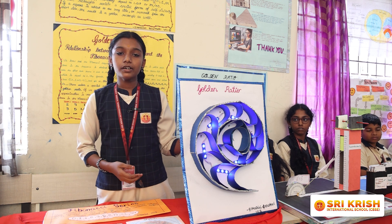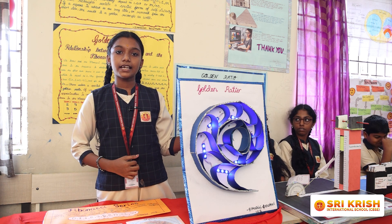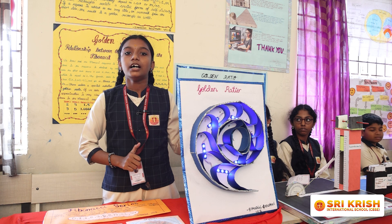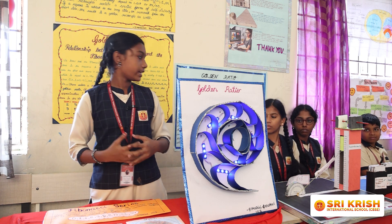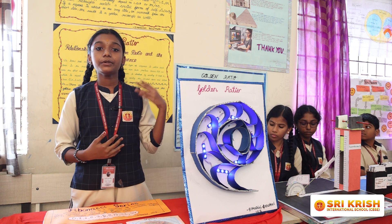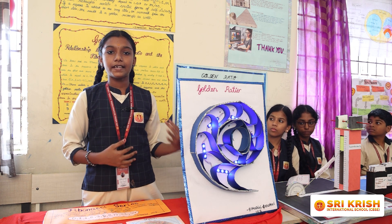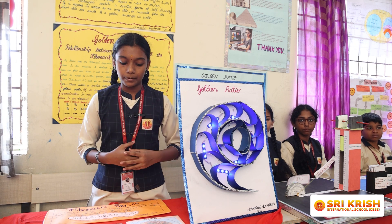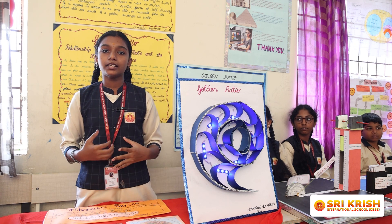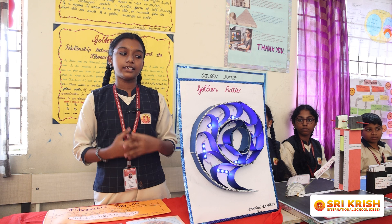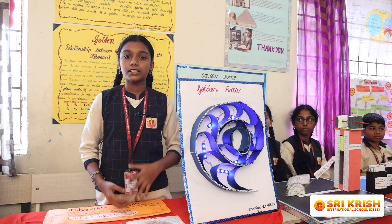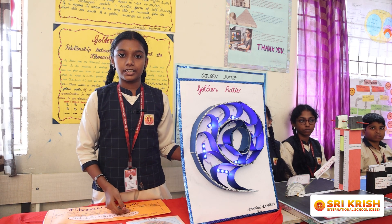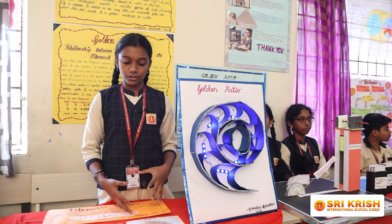The golden ratio was found in ancient times by great mathematicians like Euclid and Pythagoras, who researched its properties. It was formally documented around 300 BC by Euclid of Alexandria. In India, the great mathematician Pingala discovered the Fibonacci sequence, which is closely related to the golden ratio.